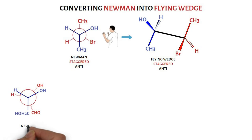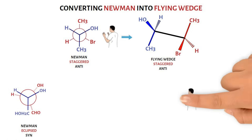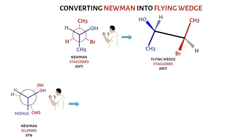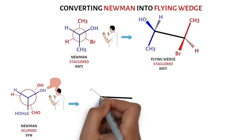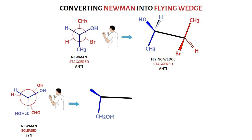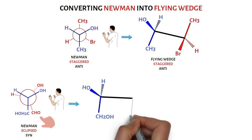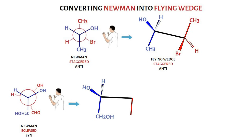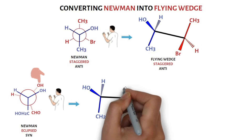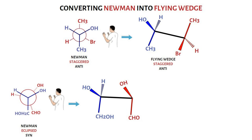Consider this Newman projection, which is eclipsed. Look at the molecule from the right side and draw the two carbons. On the left carbon, the hydroxymethyl group points down and is written in the plane of paper pointing down; the hydroxyl group comes towards you and is therefore written on a solid wedge, whereas hydrogen pointing away from you is written on dashes. Similarly, on the right carbon, the aldehyde group is pointing down and is written in the plane of paper pointing down; the hydroxyl group comes towards you and is written on a solid wedge, whereas hydrogen pointing away is written on dashes. This gives the flying wedge projection, but eclipsed.